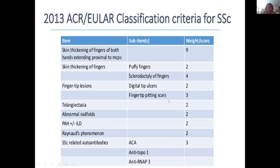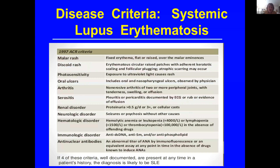This makes it much easier for patients with limited cutaneous disease to fulfill the criteria. In a study I recently did, 93% of my patients fulfilled this criteria. Lupus has a similar set of criteria, with a new one just published that gives different weighting for various symptoms. Many patients with lupus will have a positive ANA, arthritis, and photosensitivity, but may not have enough criteria to fulfill the diagnosis of lupus.